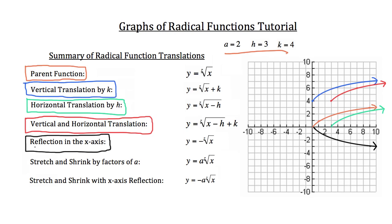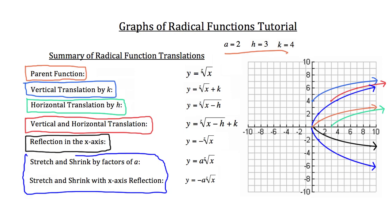You'll notice the parent function and its reflection in the x-axis create a horseshoe shape between the beige and the black. The stretch factor — the change in a — affects how wide or narrow that horseshoe opens. Let me show you with a value of 2 for a. I've drawn both a√x and negative a√x in blue. They've been stretched out, creating a larger opening than the original beige and black radical function graph. These translations affect where the vertex is and its stretch and shrink.